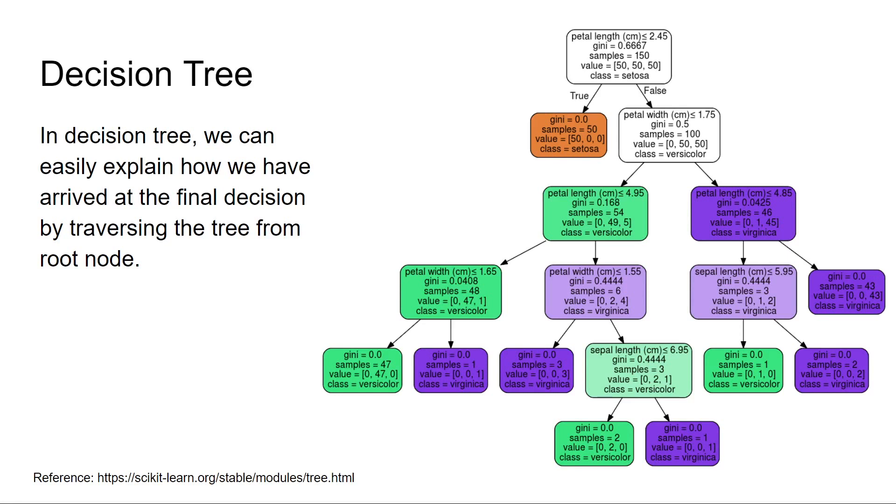Let's say you have a new data point with these features: petal length, petal width, sepal length, and sepal width. You can easily traverse through this tree and tell whether it belongs to Setosa, Virginica, or Versicolor, because you know the rules. For example, if the petal length is less than or equal to 2.45, you just predict it as Setosa.